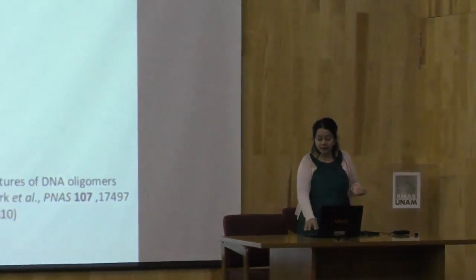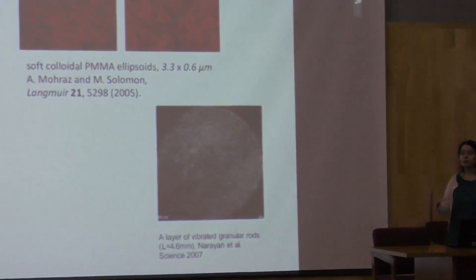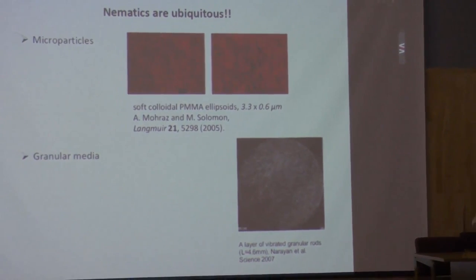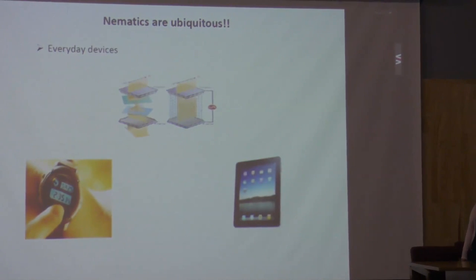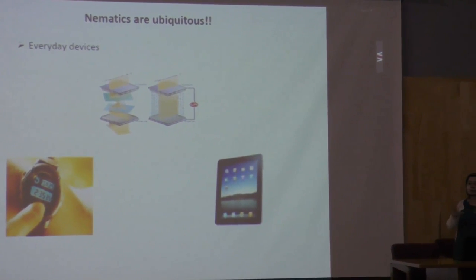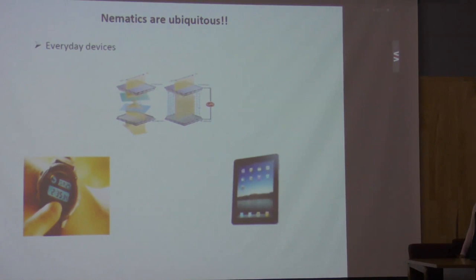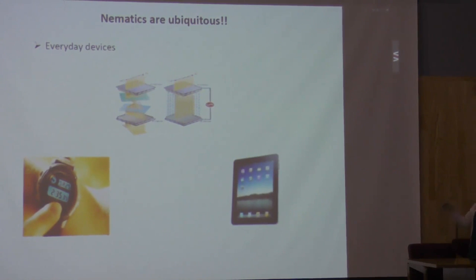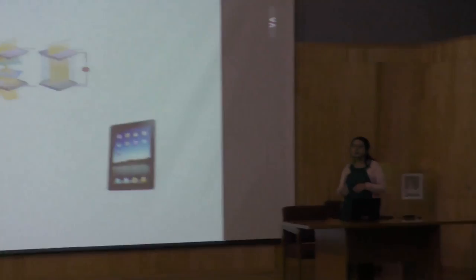You find nematic-like ordering in microparticles, colloidal suspensions, and granular media. Most importantly, nematic liquid crystals are the working material of choice for the multi-billion dollar LCD industry — used in laptops, some watches, thermometers, and television screens. They have been a huge success for optoelectronic devices.